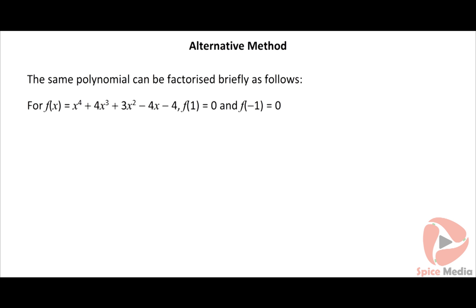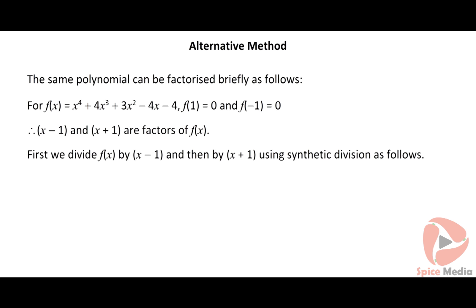For f(x) = x⁴ + 4x³ + 3x² − 4x − 4, f(1) = 0 and f(−1) = 0. Therefore x − 1 and x + 1 are factors of f(x). First we divide f(x) by x − 1 and then by x + 1 using synthetic division.